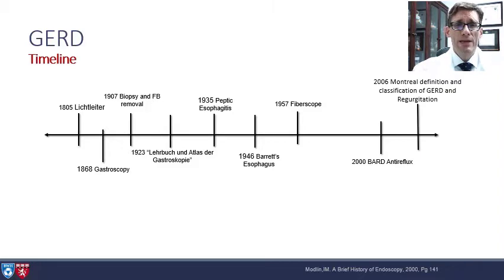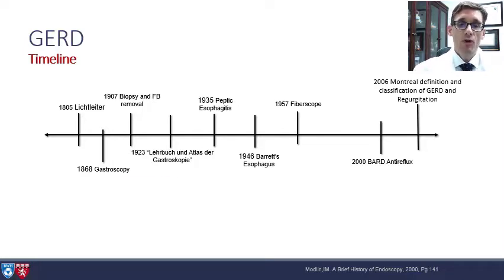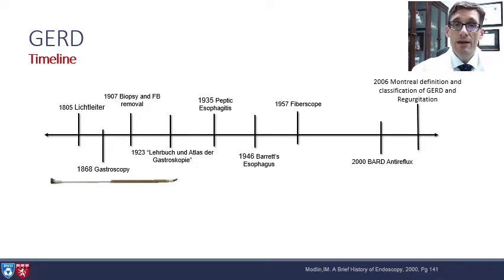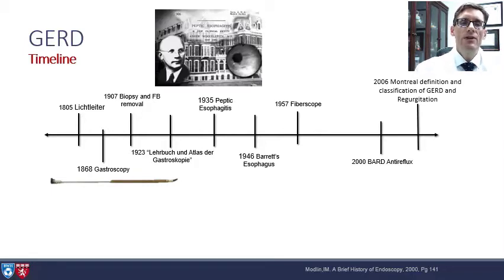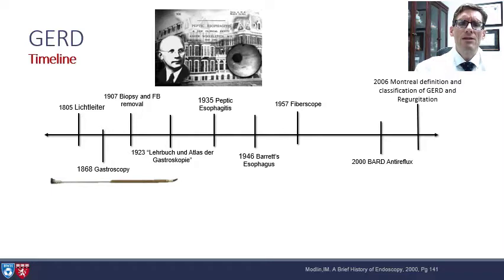Here we have a slide illustrating the timeline of gastroesophageal reflux disease with some elements of endoscopy as well. In 1868, the first gastroscopy was performed by Kuzma. In 1907, we have foreign body removals and tissue biopsies performed by Chevalier Jackson. In 1923, the first atlas of gastroscopy was published by Rudolf Schindler. Then in 1935, we have the first characterization of peptic esophagitis by Professor Asher Winklestein, who was the chief of GI at Mount Sinai in New York.